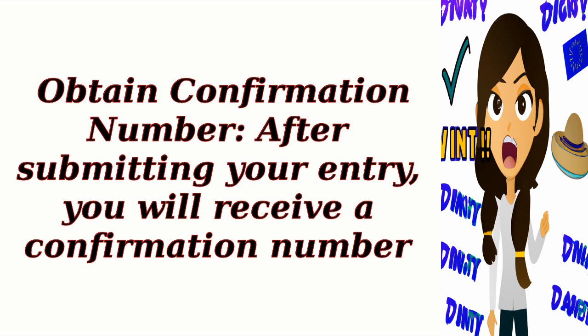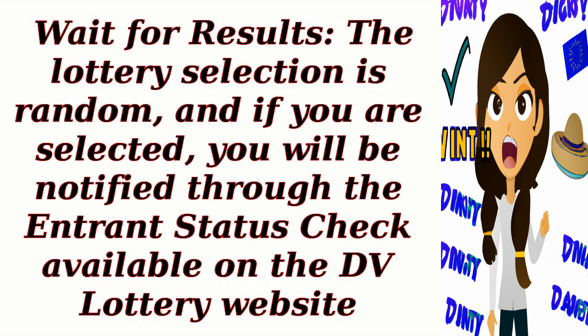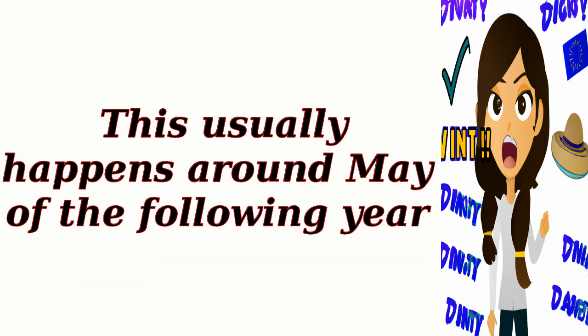Step 3: Obtain a confirmation number. After submitting your entry, you will receive a confirmation number. Keep this number safe as it is required to check the status of your application later. Step 4: Wait for results. The lottery selection is random, and if you are selected, you will be notified through the Entrant Status check available on the DV lottery website. This usually happens around May of the following year.